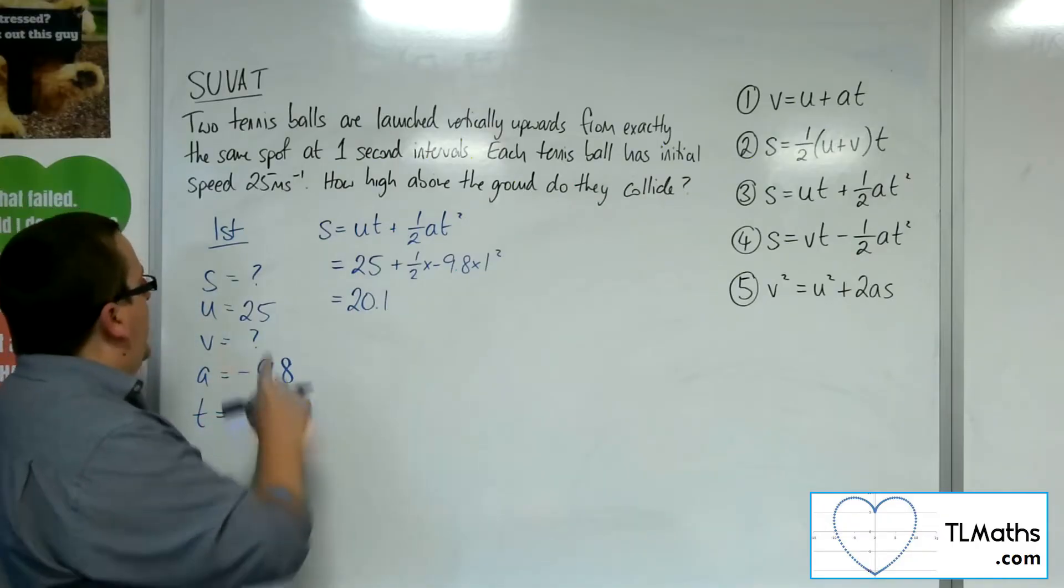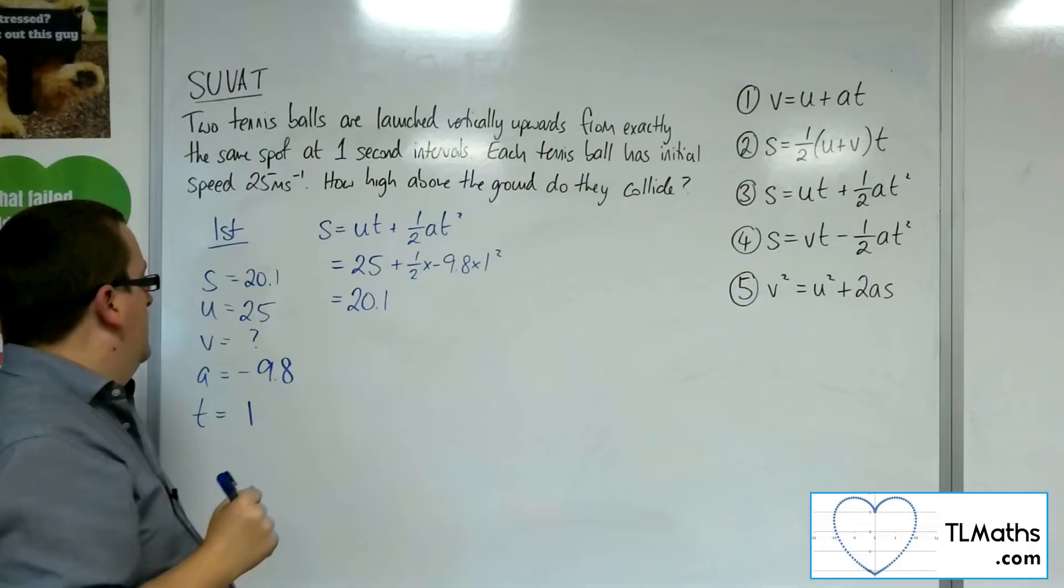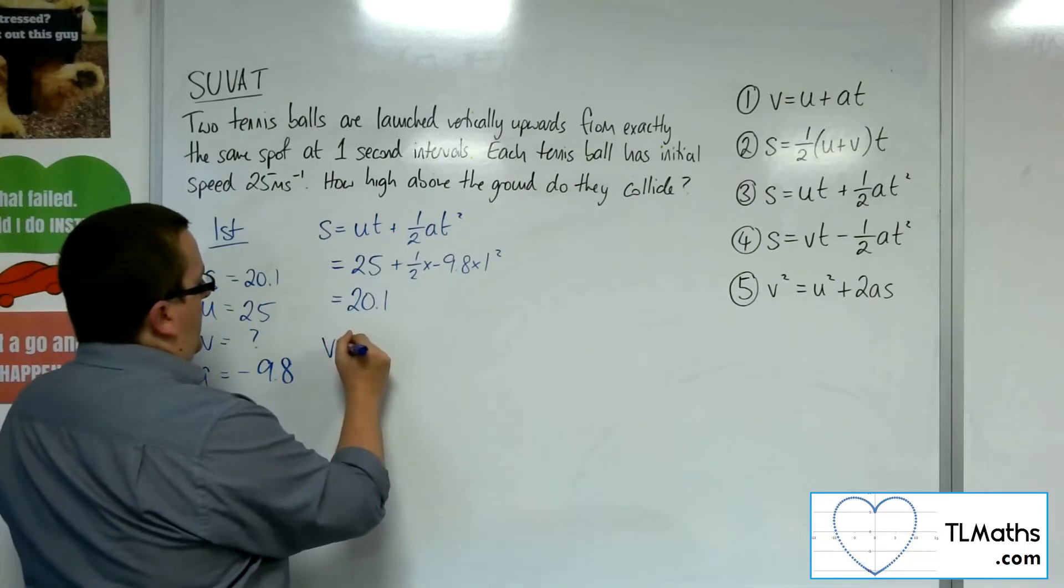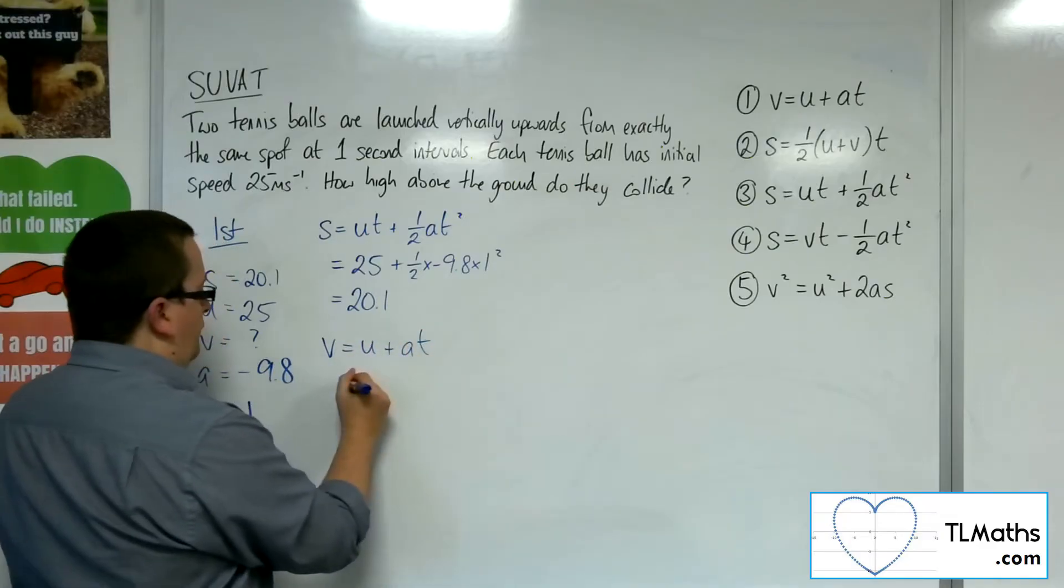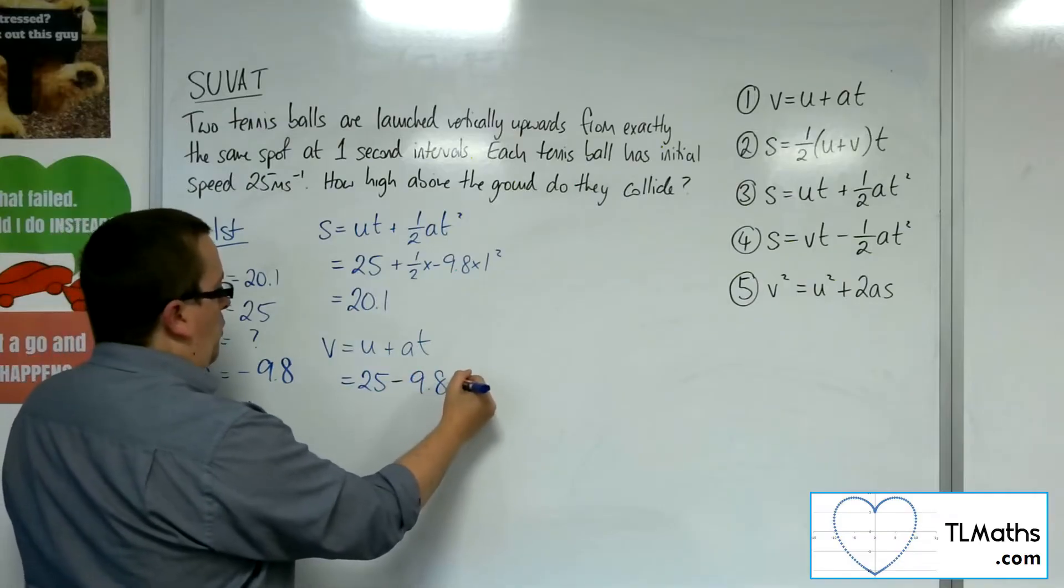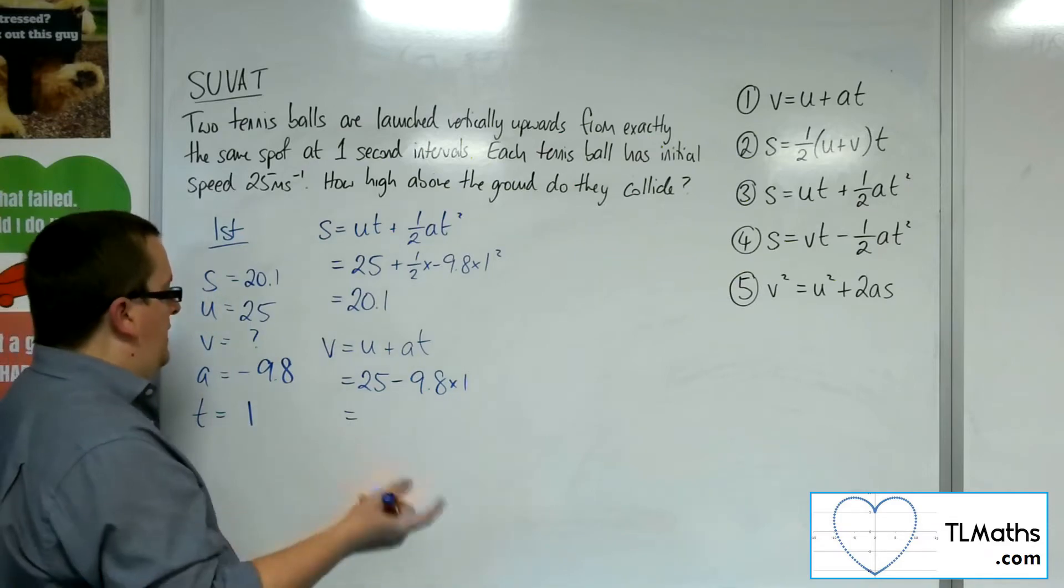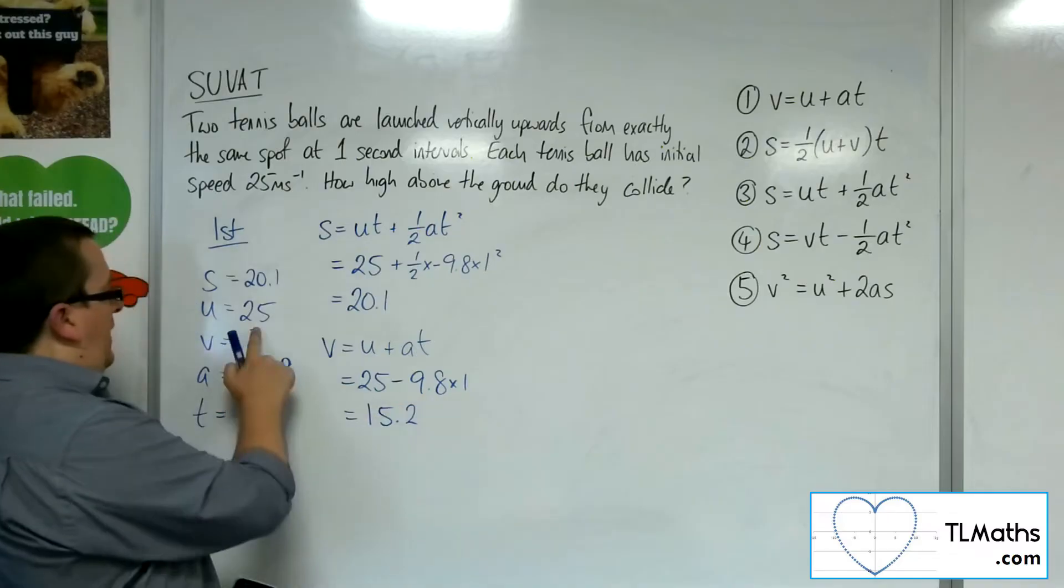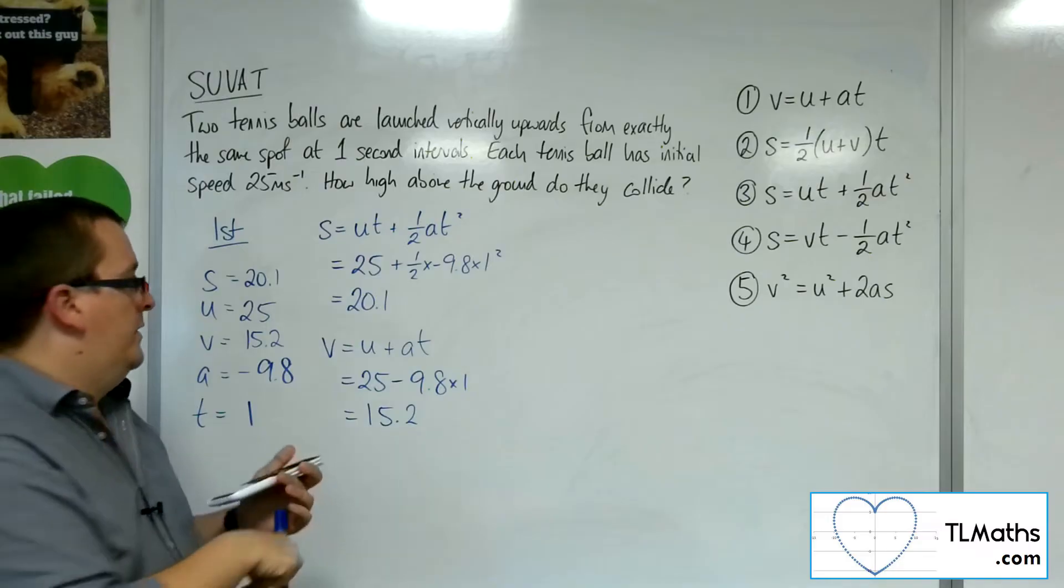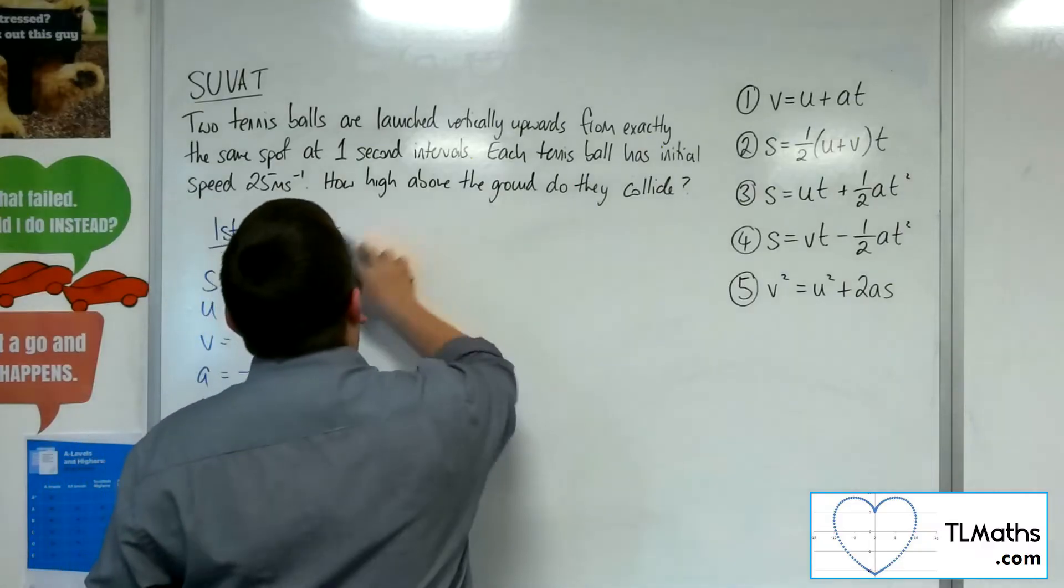Okay, so I now know the 20.1, that's its displacement after one second. Now, as for its velocity, I could use v equals u plus at here. So v equals u plus at. So u is 25, a is minus 9.8, and t is 1. So 25 take away 9.8, and that gets me 15.2. So after one second, it's travelling 15.2 metres per second. So that's the information I have about the first ball.